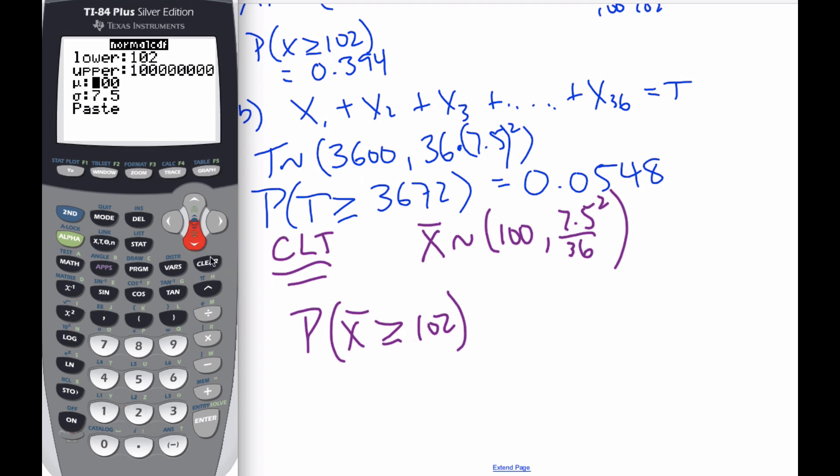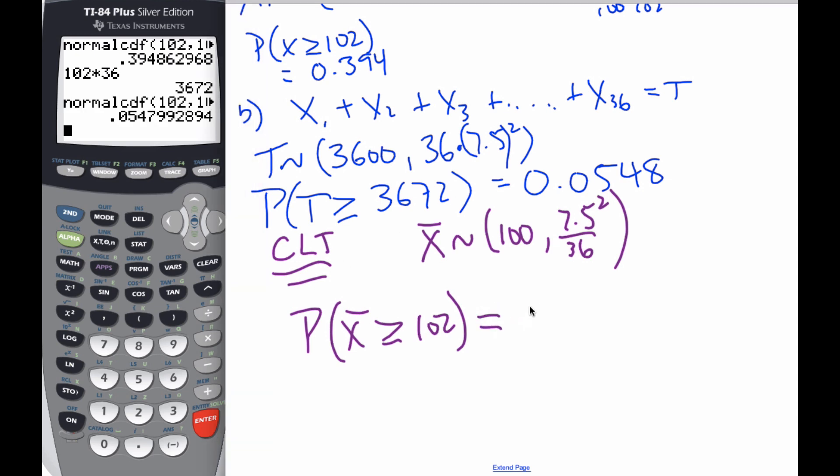But it's my variance that's going to be different. It's going to be our standard deviation at 7.5 divided by 6. And when I do that, I clearly see I get the same probability of 5.48 percent.